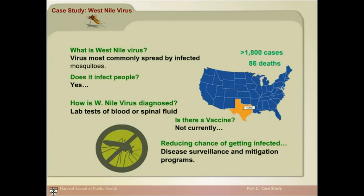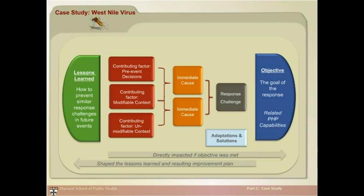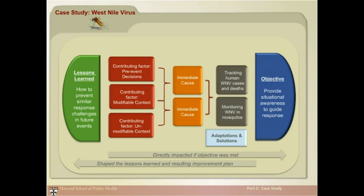Mitigation may include encouraging people to use insect repellent and wear long sleeves and pants when going outdoors. Aerial pesticide spraying may also be used to kill adult mosquitoes. During outbreaks, public health is responsible for monitoring West Nile virus activity and relies on accurate information about human disease. The objective in this incident was to provide situational awareness of West Nile virus to guide response efforts. The response challenges were in obtaining consistent and reliable data to track human West Nile virus cases and deaths.